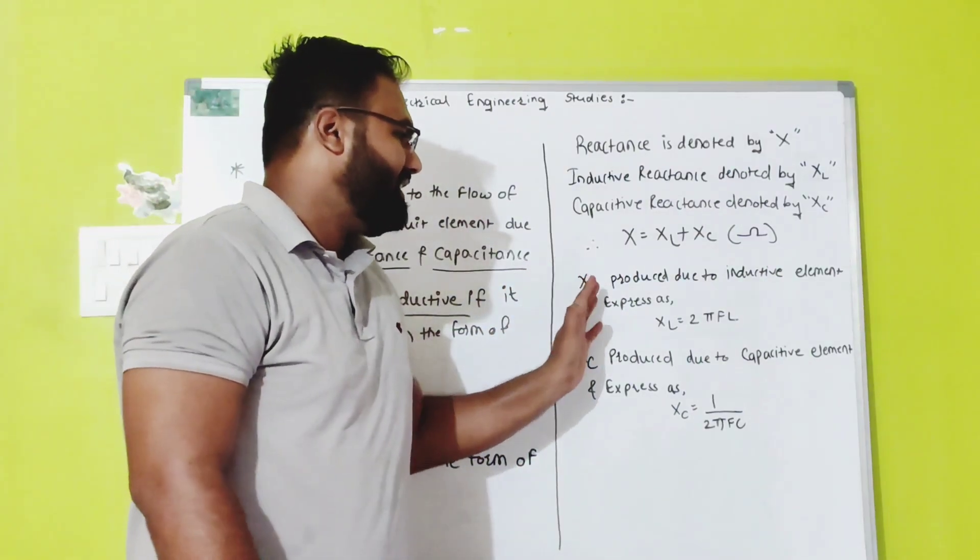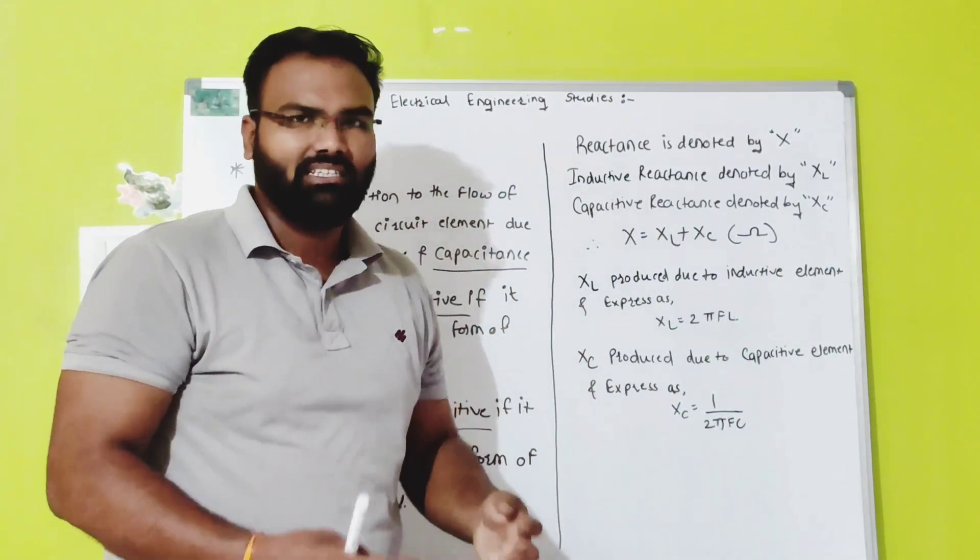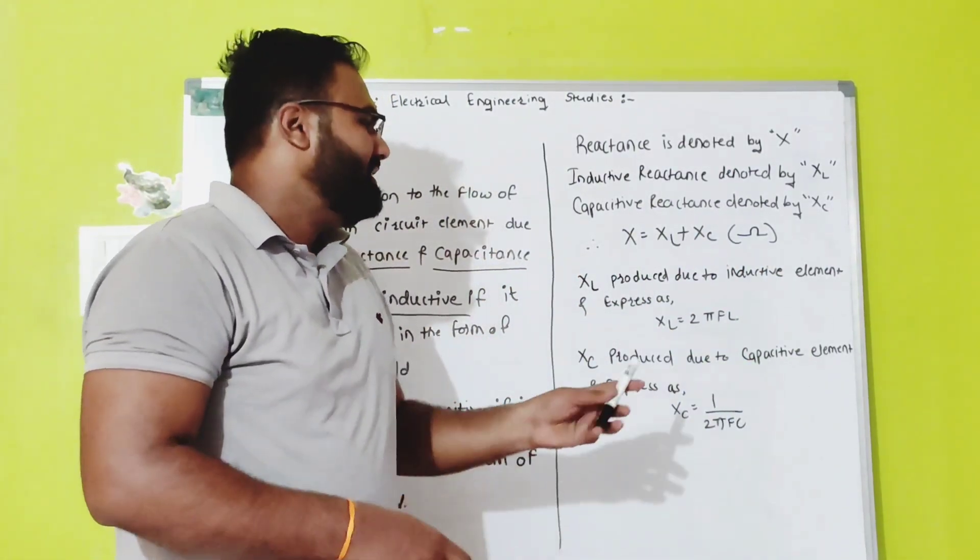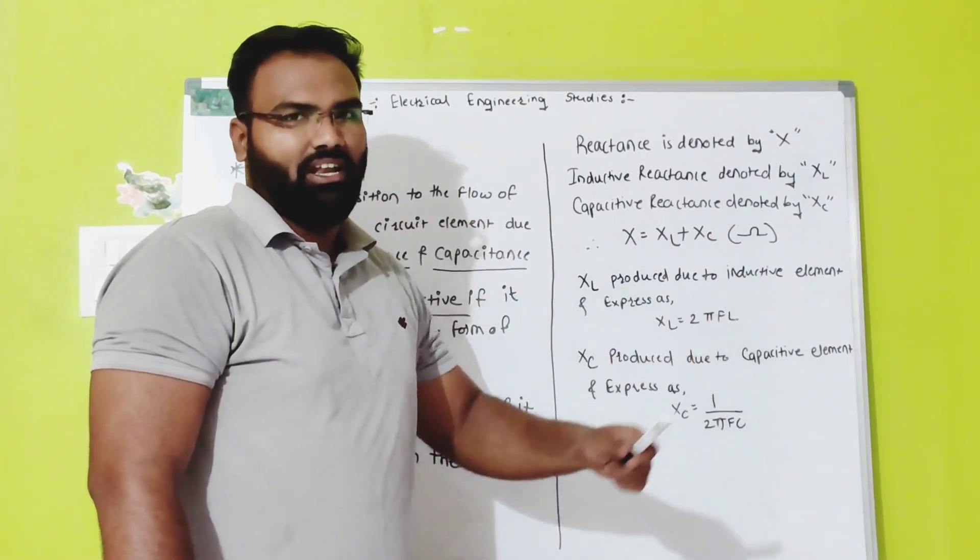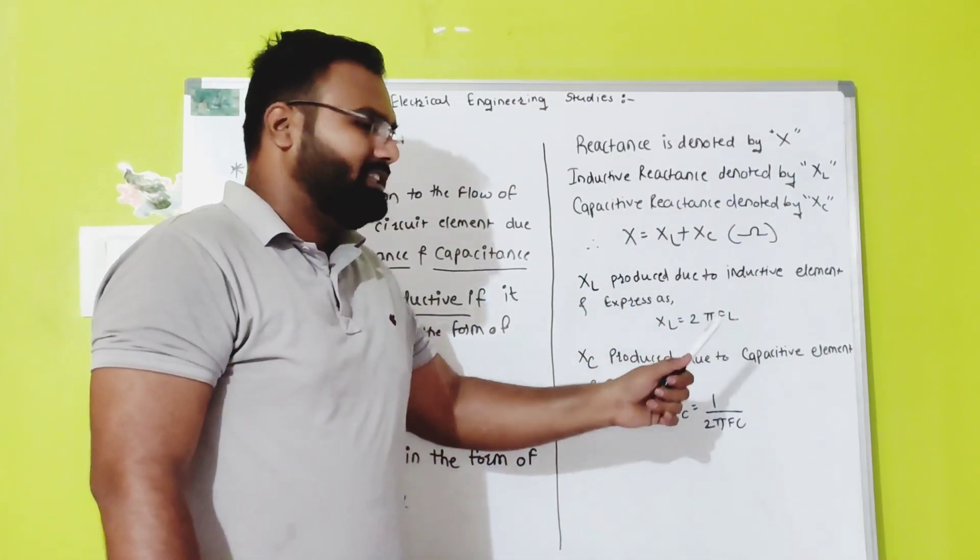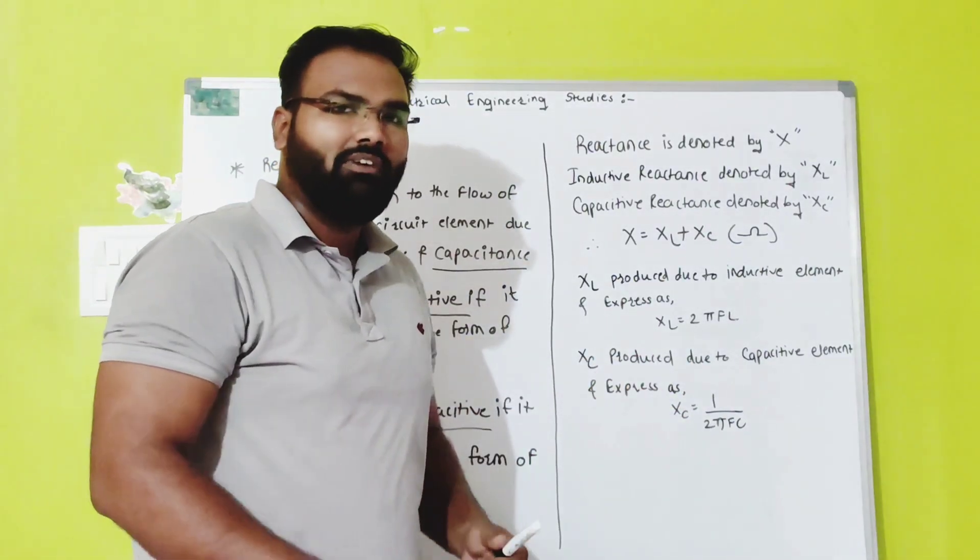After that, XL is produced due to the inductive element and there is a special formula for that, which is XL equals 2 pi F L, where F is nothing but the frequency and L is nothing but the value of your inductor.